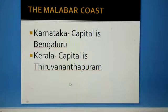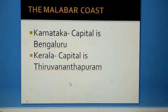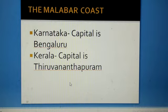The third and last coast related to the western coastal plains is the Malabar coast. The states which lie here are Karnataka and Kerala. The capital of Karnataka is Bengaluru, and the capital of Kerala is Thiruvananthapuram.